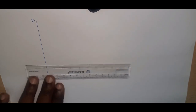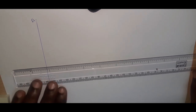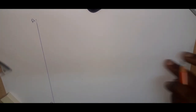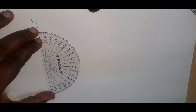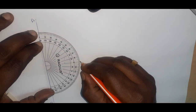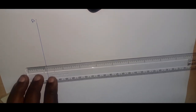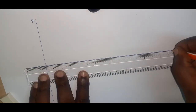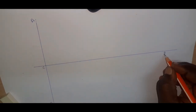Now I am going to draw the directrix. I have taken a lengthy scale and fixed it at 90 degrees. So this will be the 90-degree line and we got the directrix. I can draw the directrix here.